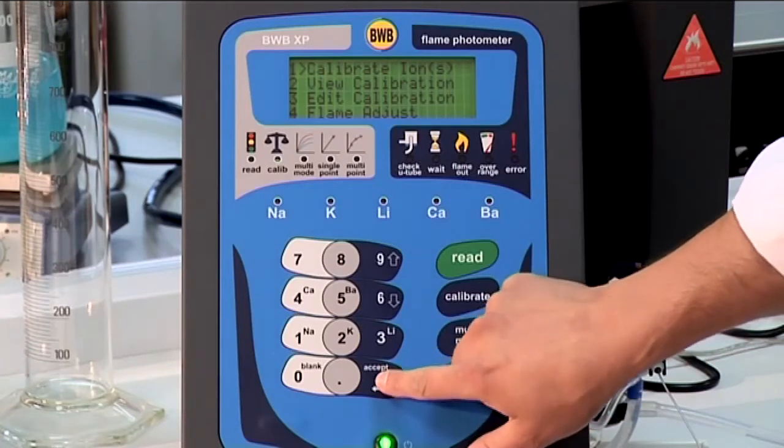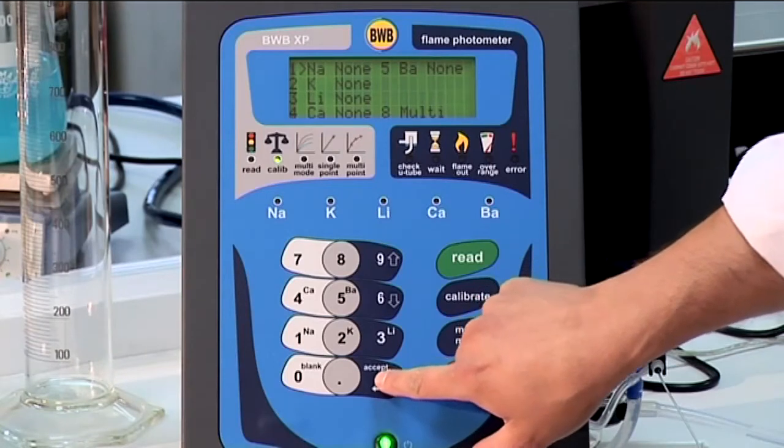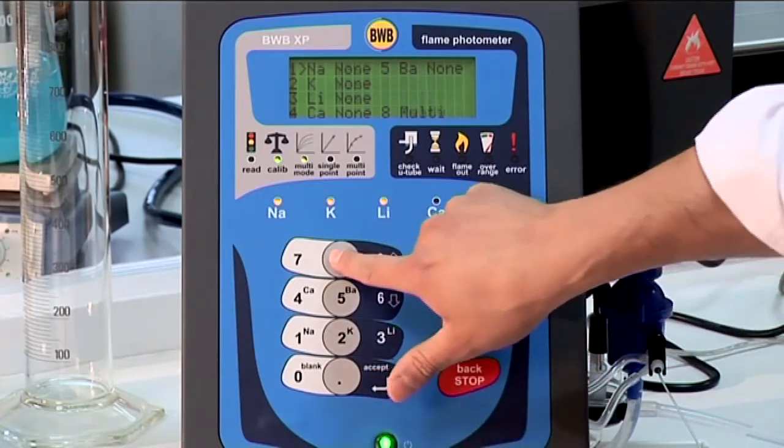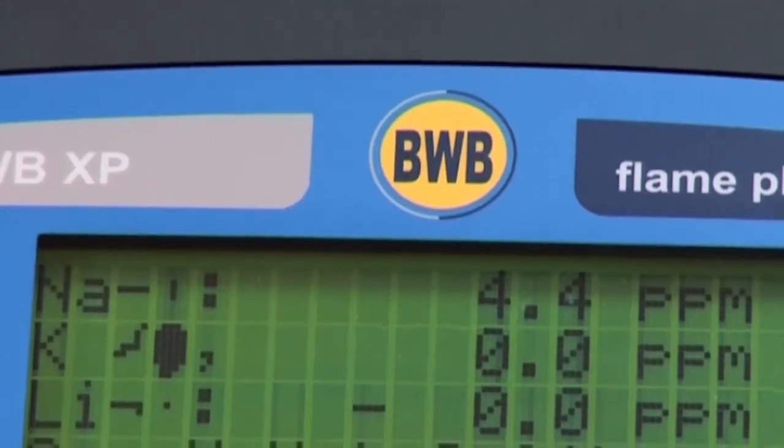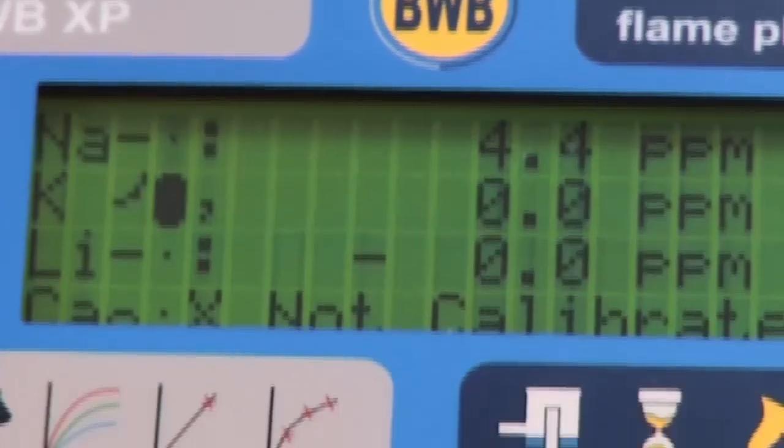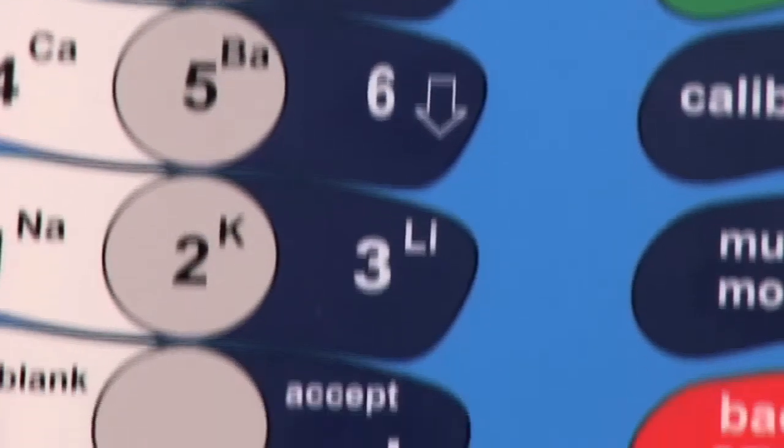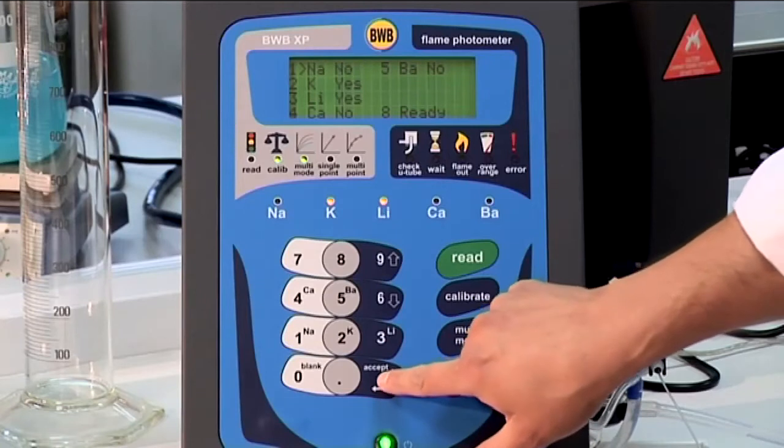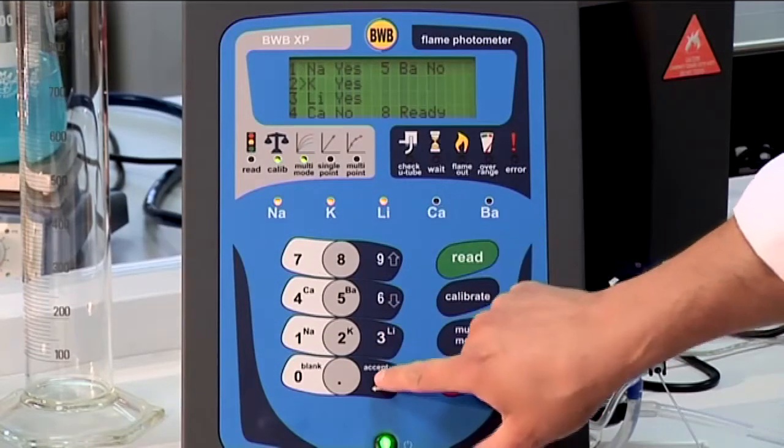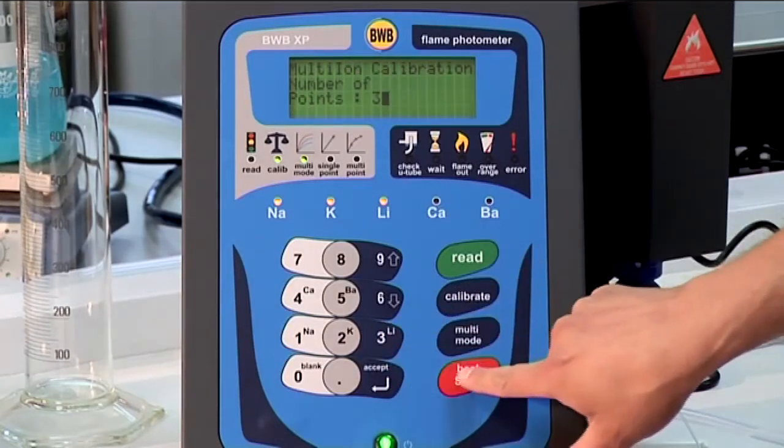From the main menu, we can go through the calibrations menu and to the calibrate ions menu, where we will opt for number 8, multi, or we can press the multi-mode key and go to the same location directly. For each ion, pressing its respective key will toggle between yes and no. In this calibration, we toggle to yes for sodium, potassium, and lithium. We are prompted for a number of points. Enter 3.